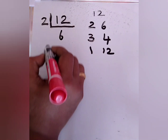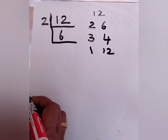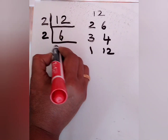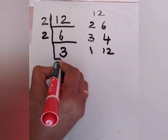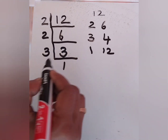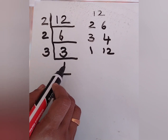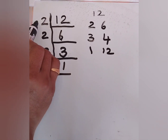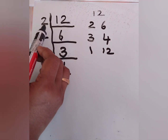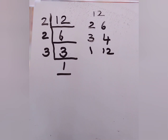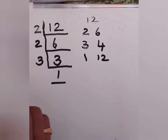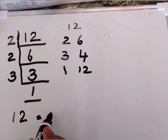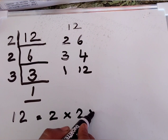So, 2 × 6 = 12. In normal division, we write the quotient on top, but here we are writing it down. Next, again dividing 6: 2 × 3 = 6. Then, 3 ÷ 3: 3 × 1 = 3. We have to divide the given number till we reach 1. So, the factors we got are 2 × 2 × 3.